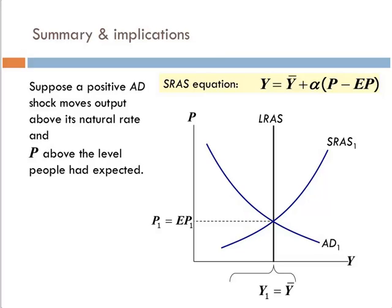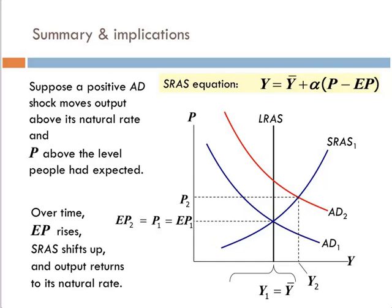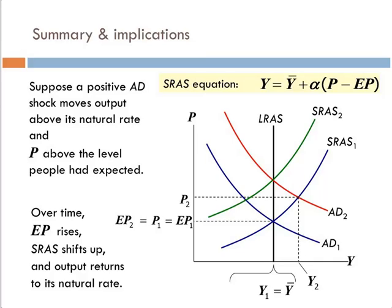Suppose we have a positive aggregate demand shock. It moves output above its natural rate and the price level above what people had expected. We end up with a new short-run equilibrium at a higher price and higher output. Over time, though, our expectations of prices must rise — we won't keep our expectation at price level one if we continue to see price level two. So the short-run aggregate supply curve shifts back due to this adjustment in expected price, and we get a new equilibrium at a higher price level.